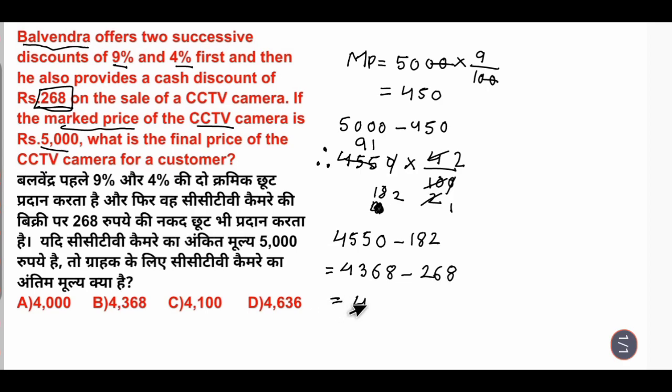And then Rs. 4,368 minus Rs. 268 cash discount equals Rs. 4,100. This was the actual final price of the camera.